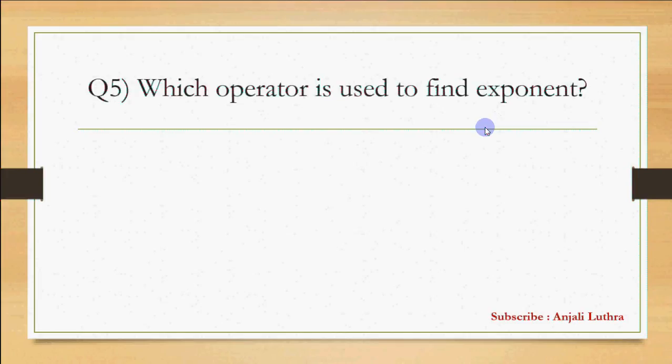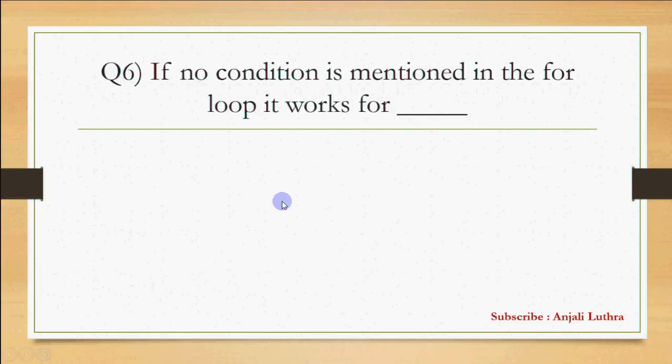Question 5: Which operator is used to find exponent in C? Exponent means power of a number. If I have to calculate A raised to the power B, which operator can you use in C? The answer for this is none of these. In C language, no operator can calculate exponent. Rather, we have a function called POW, which you have to include math.h to use.